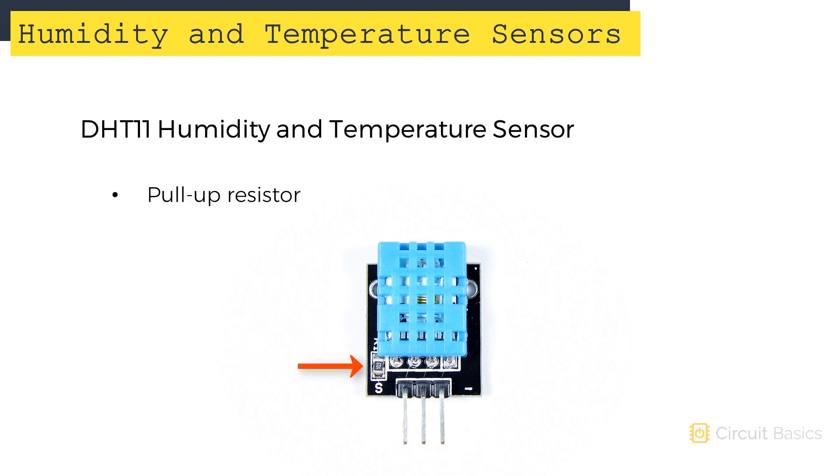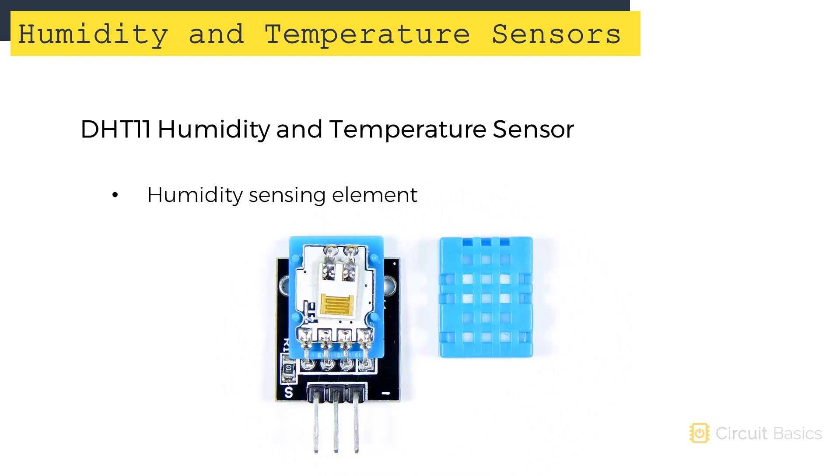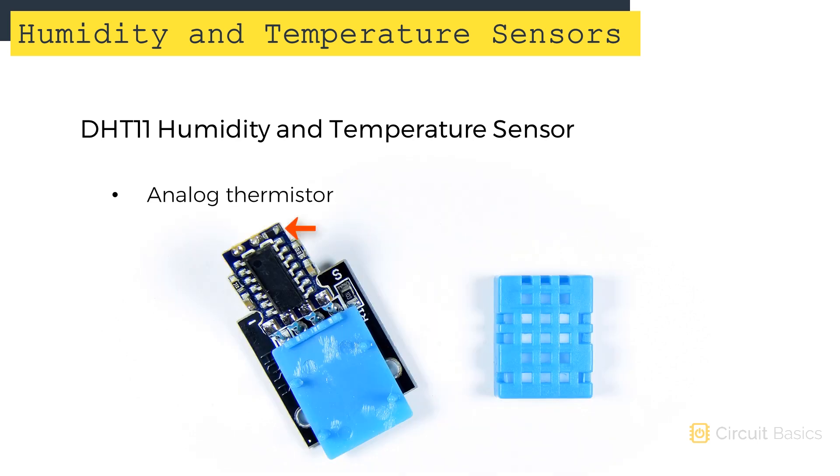The breakout board version comes with a pull-up resistor. The temperature and humidity sensing elements are inside the plastic case. This is the humidity sensing element. On the back of the chip, there's a surface-mounted analog thermistor that provides temperature readings. This chip right here is an 8-bit microcontroller that converts the analog humidity and temperature data into a digital signal that's sent to the Arduino.